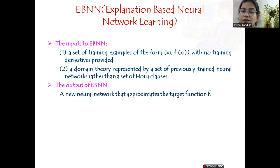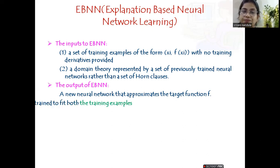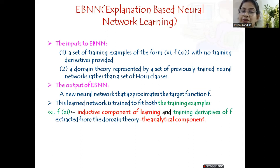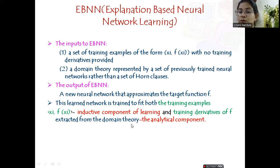The output of EBNN is always a new neural network that approximates the target function f. Comparatively, the efficiency of this should be better than KBNN, because we are taking the trained weights and supplying some more examples to it. This learned network tries to fit both the training examples in the form of x_i comma f(x_i) — satisfying the inductive component — and also satisfies the training derivatives extracted from the domain theory, which is the analytical component. So it is a combination of both inductive and analytical learning.